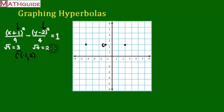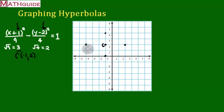Let's do the same thing with the 2. Since the 2 is underneath the y, y is considered a vertical variable. We're going to go up and down 2 from the center — up 2 and down 2. If this was an ellipse with a plus sign between the two fractions, I would circle those four numbers in an oval or elliptical shape.